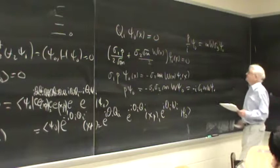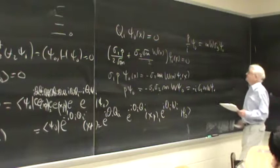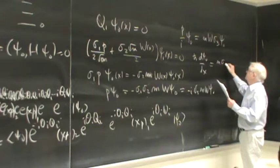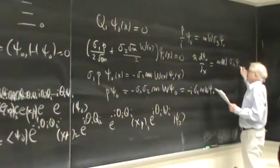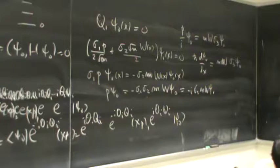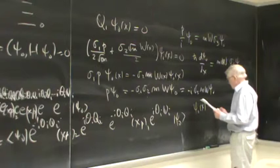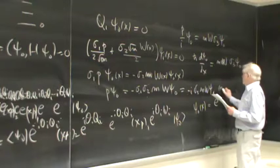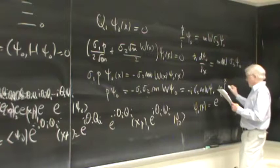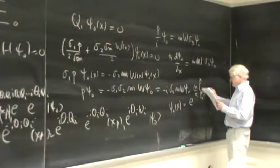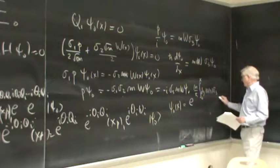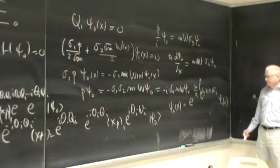This is my favorite kind of equation — a first-order differential equation, which we can always solve. The answer is ψ₀(x) = exp[(m/ℏ) ∫₀ˣ dy W(y) σ_3] acting on ψ₀(0), a two-component vector.